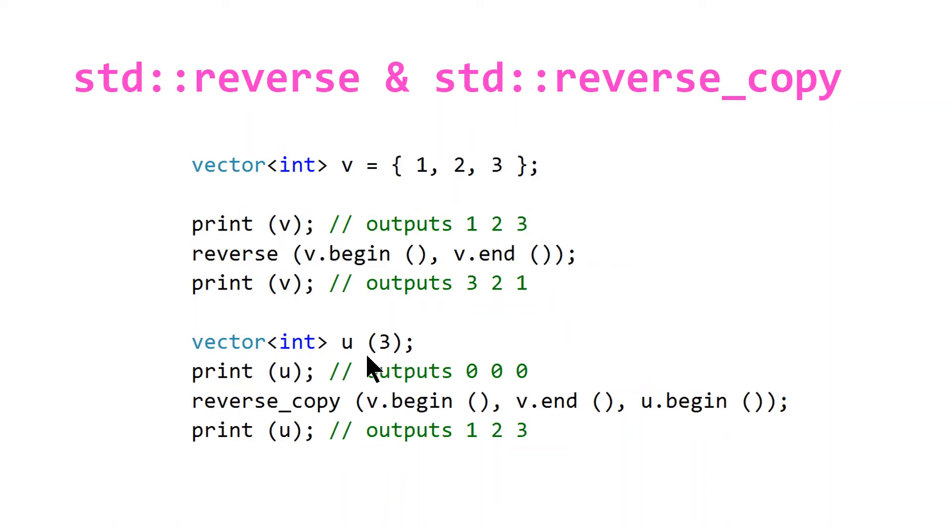This will output initially zero because it's the default for an integer is zero. And then we call reverse_copy and we pass in a third parameter which is the iterator pointing to the beginning of this vector of integers.